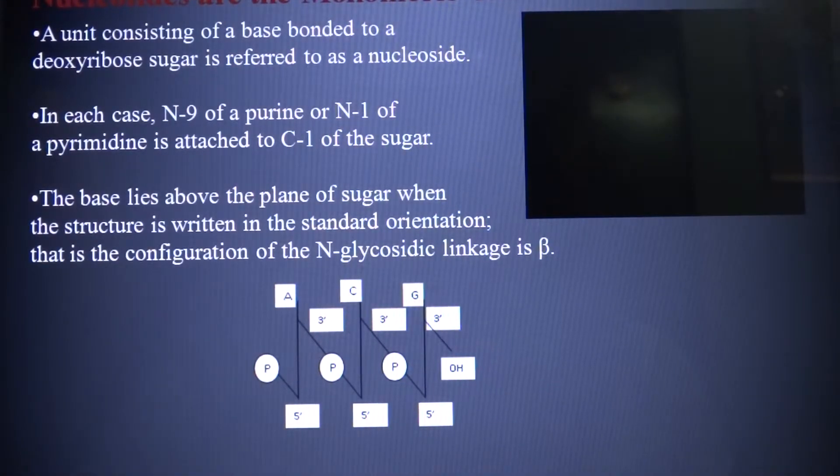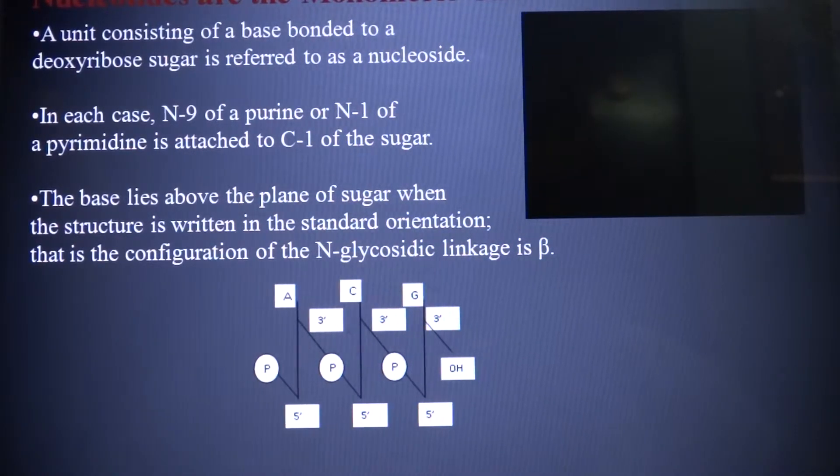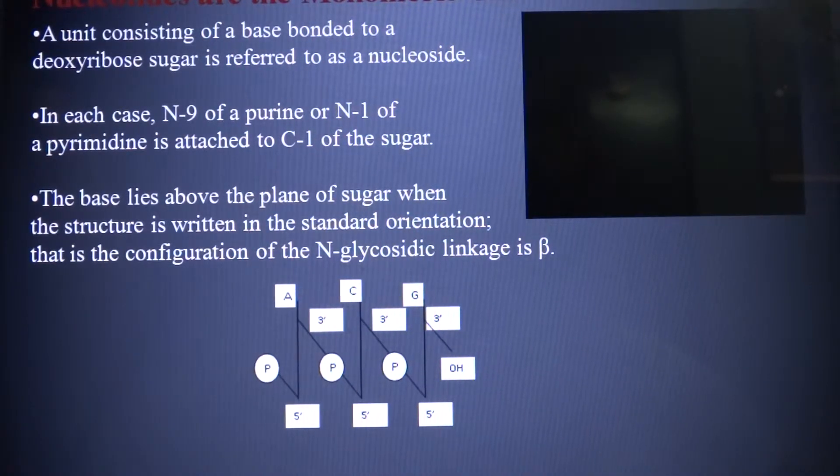Now I come to nucleotides as the monomeric units of nucleic acids. A unit consisting of a base bonded to a deoxyribose sugar is referred to as a nucleoside. In each case, N9 of a purine or N1 of a pyrimidine is attached to C1 of the sugar. The base lies above the plane of sugar when the structure is written in standard orientation, that is, the configuration of the N-glycosidic linkage is beta.